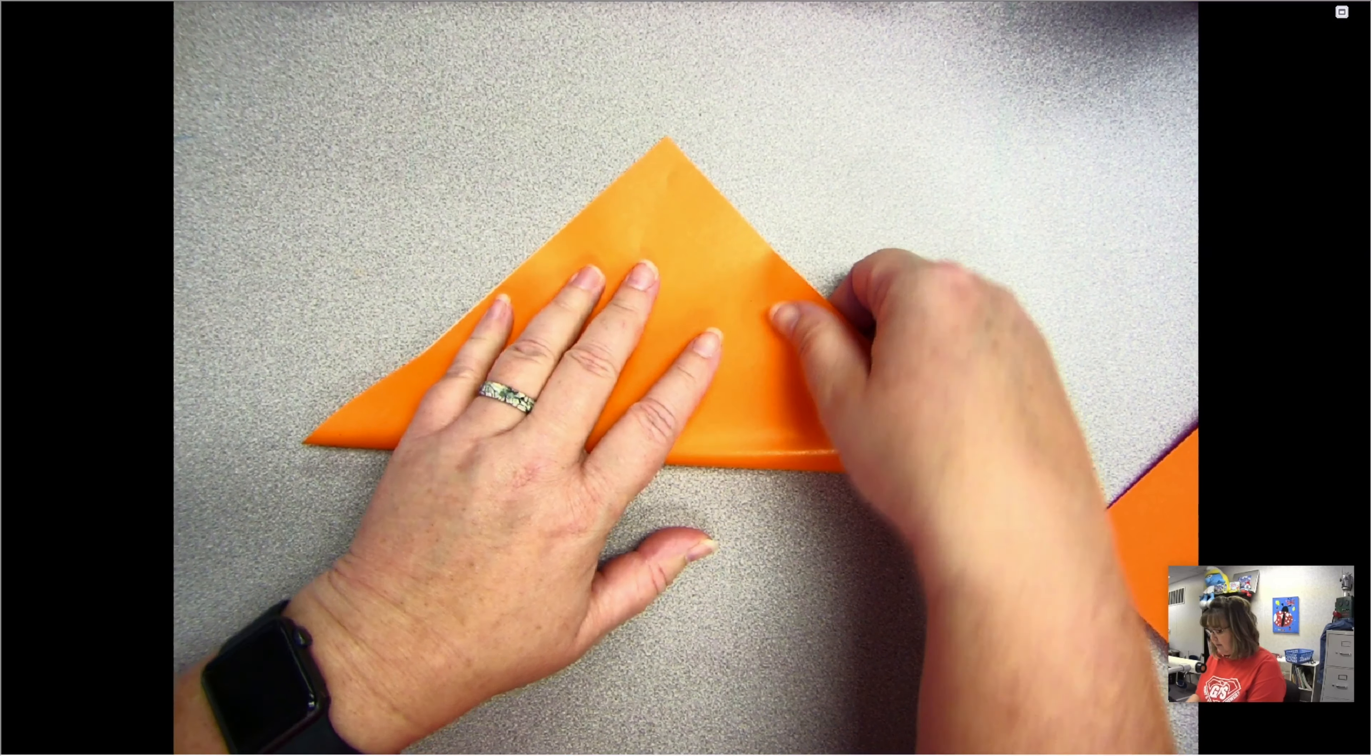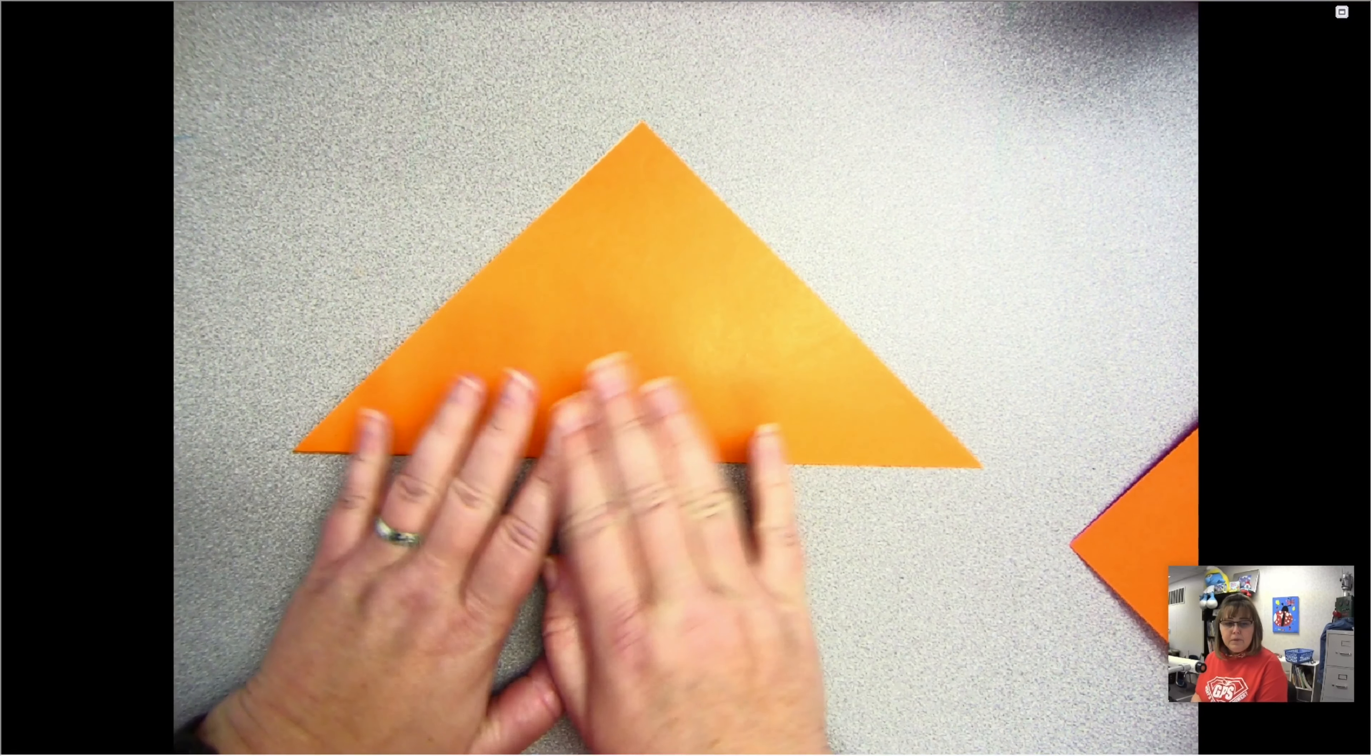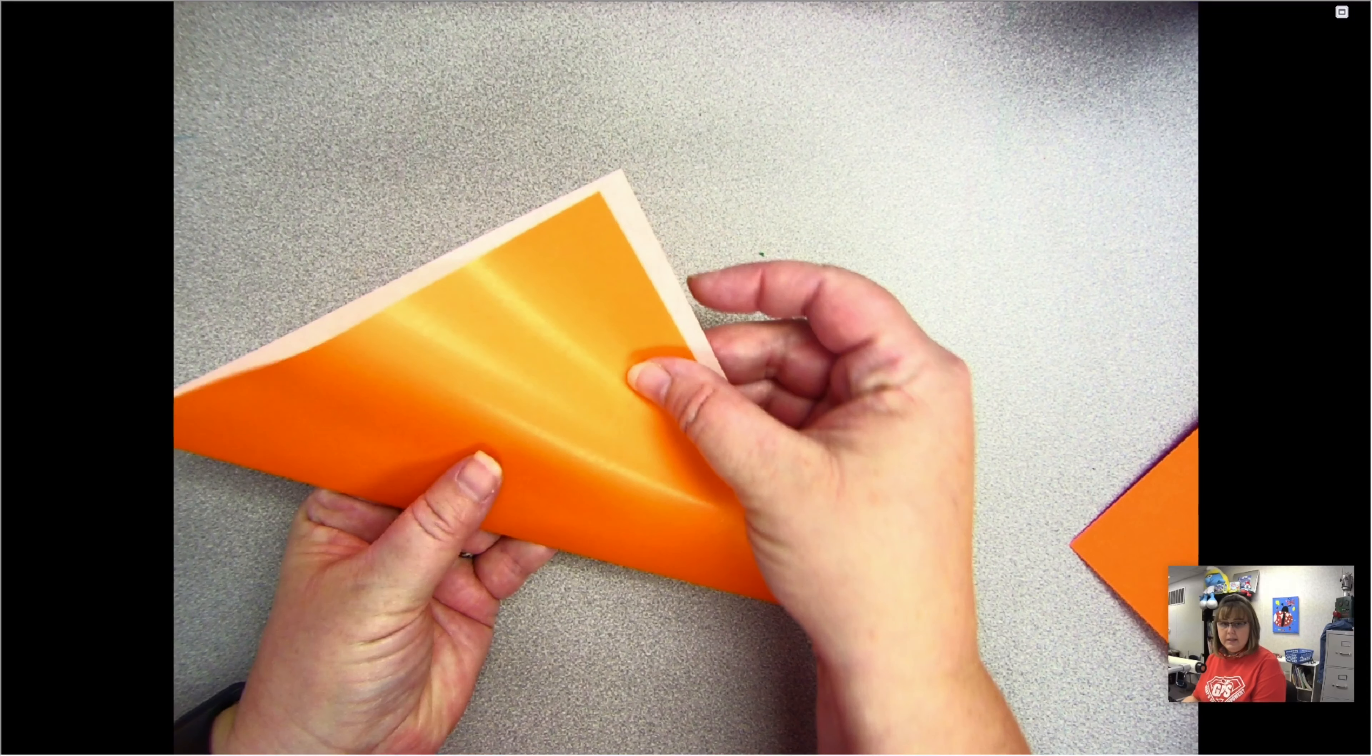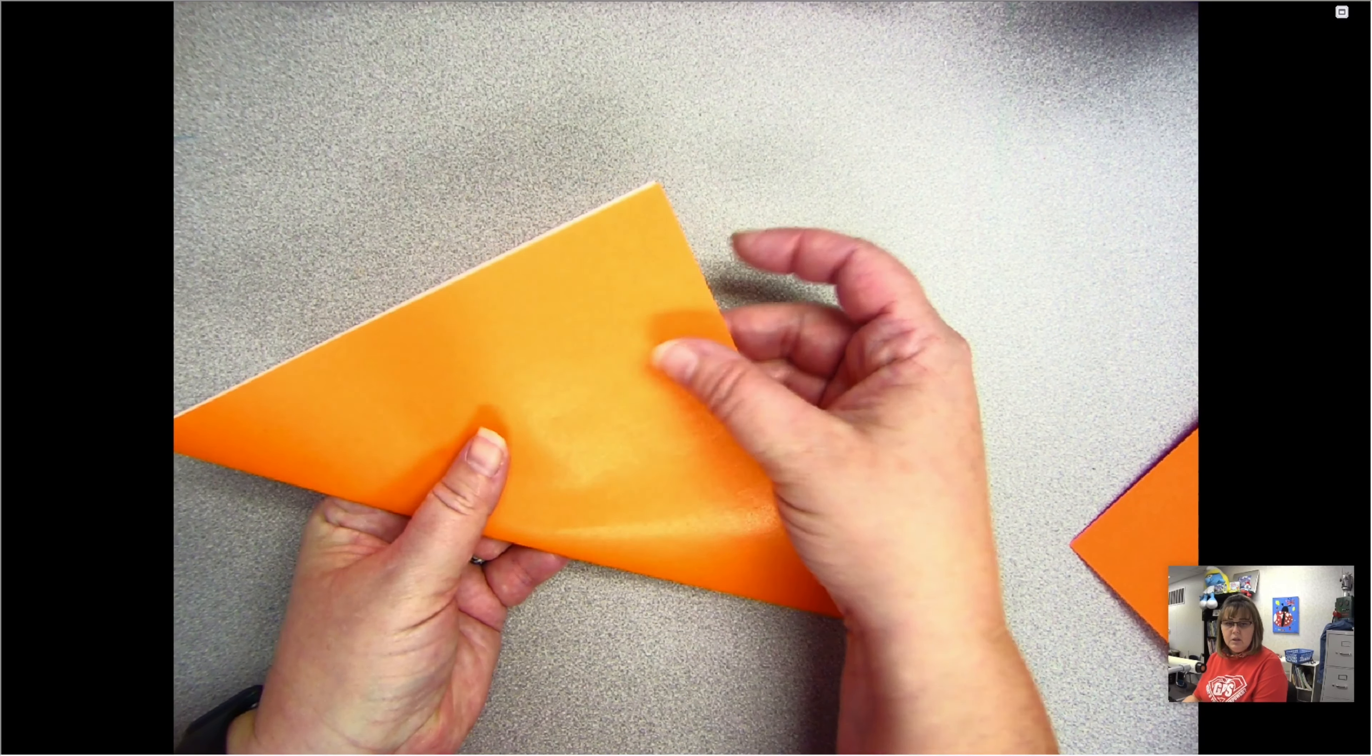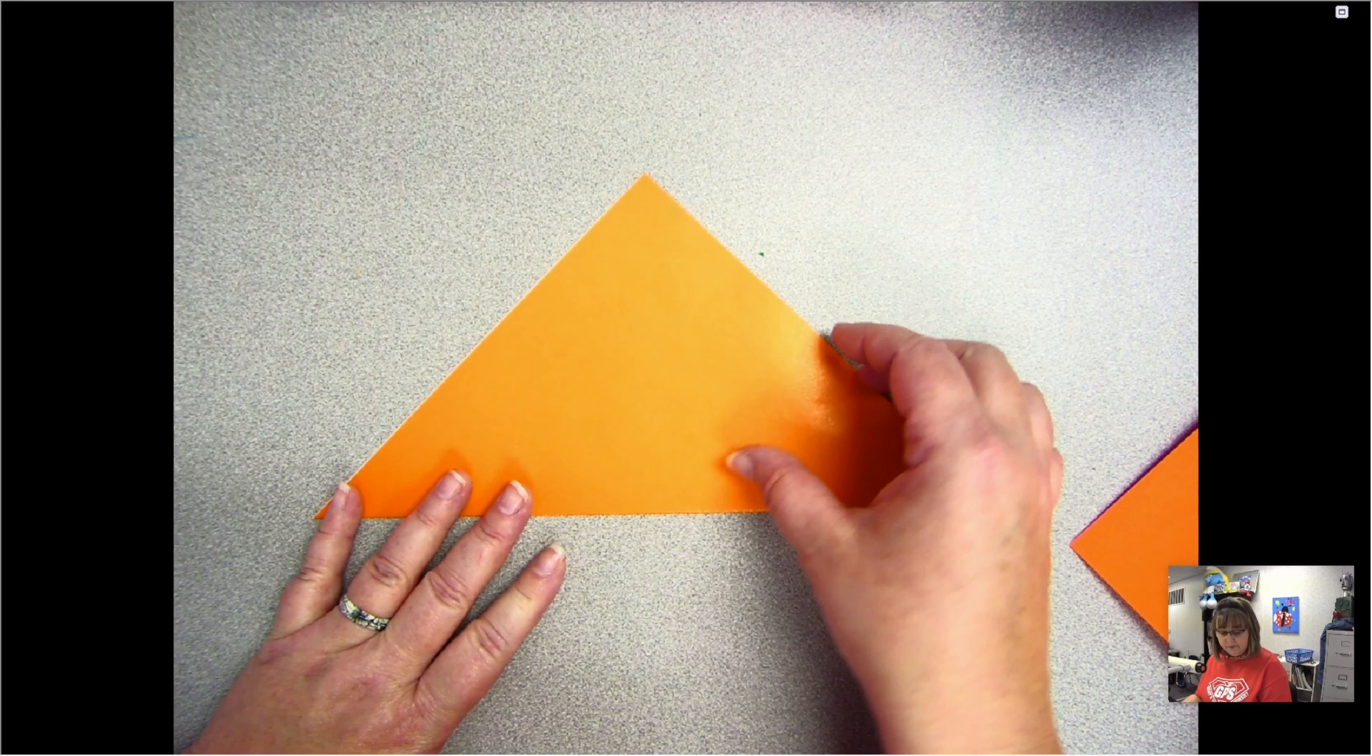I have my origami paper here. I'm going to start by lining up my edges. Now to get a good fold, you always have to make sure your edges line up. You don't want the other piece showing, you want to line it up as best you can before you press down your fold.